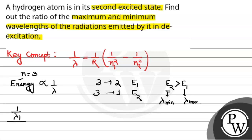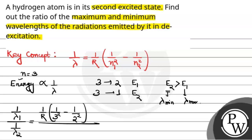Toh hum formula mein put karte hain. 1/λ_max = R × (1/3² − 1/2²), and 1/λ_min = R × (1/3² − 1/1²). So lambda 2 is lambda min and lambda 1 is lambda max.